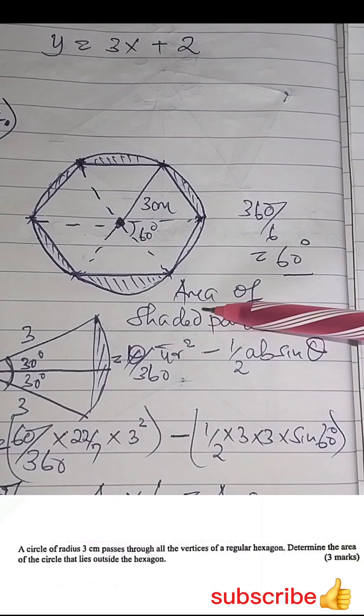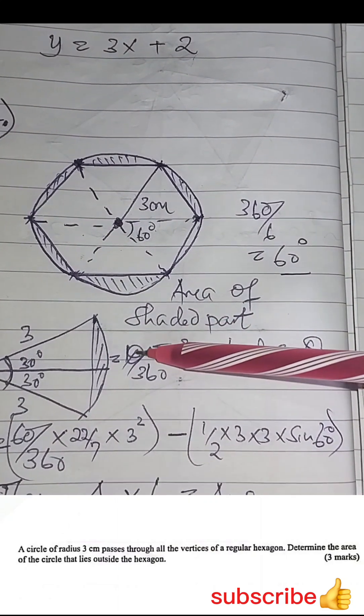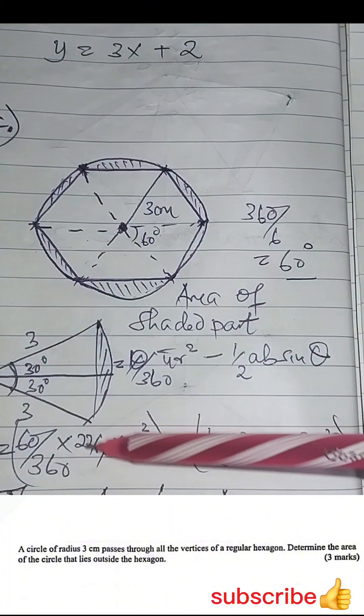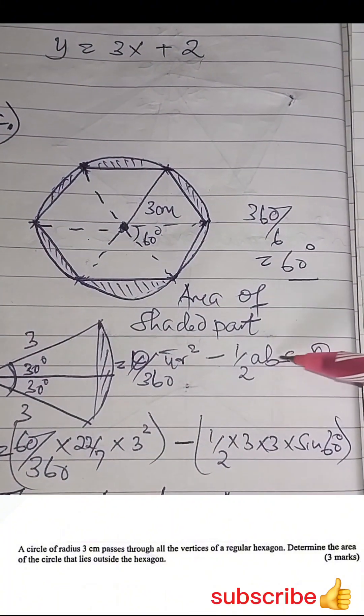If you want the area of the shaded part, you have the area of a sector which is theta over 360, pi r squared, then you subtract the area of the triangle, which is a half a b sine theta.